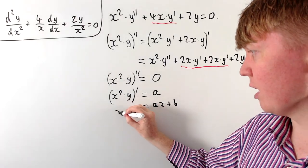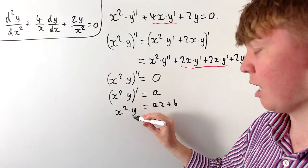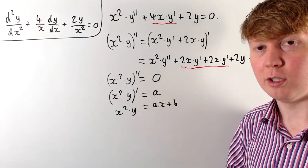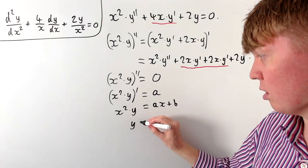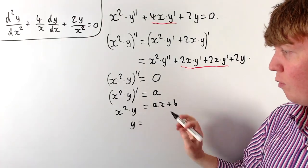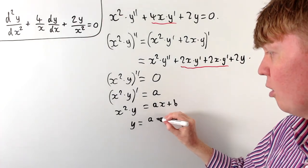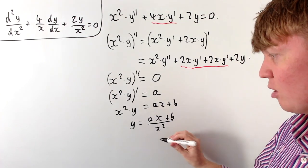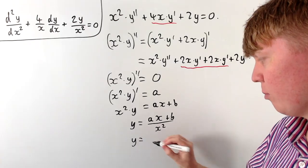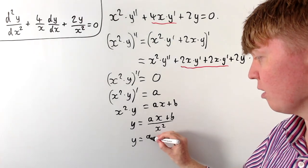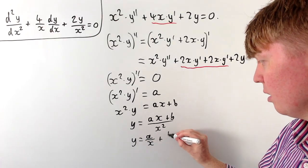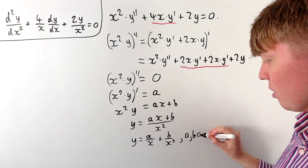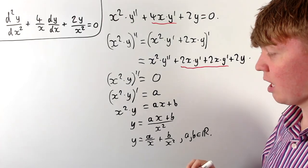On the left-hand side, integrating gives x squared times y, with any constant absorbed into b. Dividing through by x squared, y equals (ax + b) over x squared. We can also write this as two separate fractions: y equals a over x plus b over x squared, where a and b are real constants.